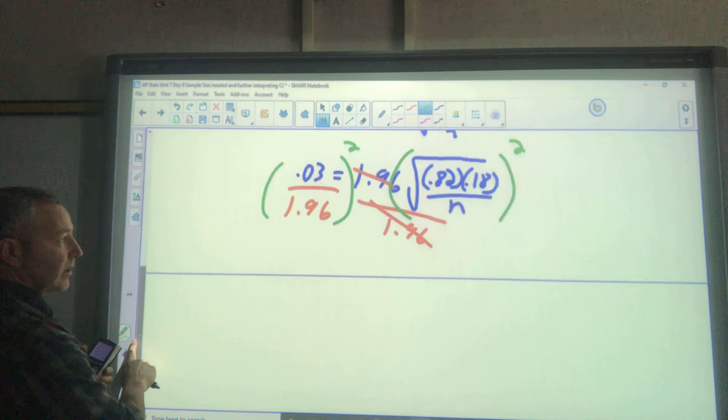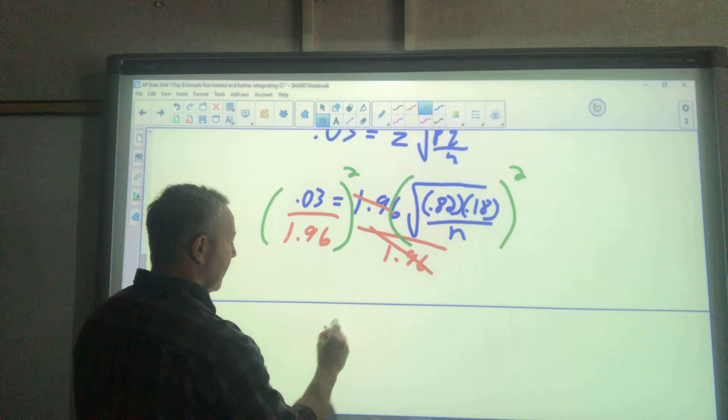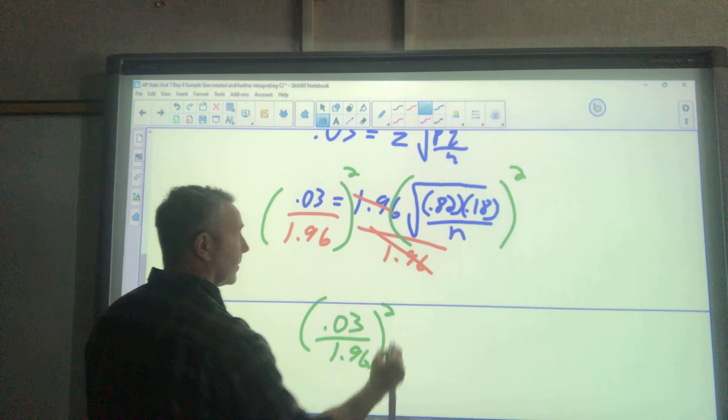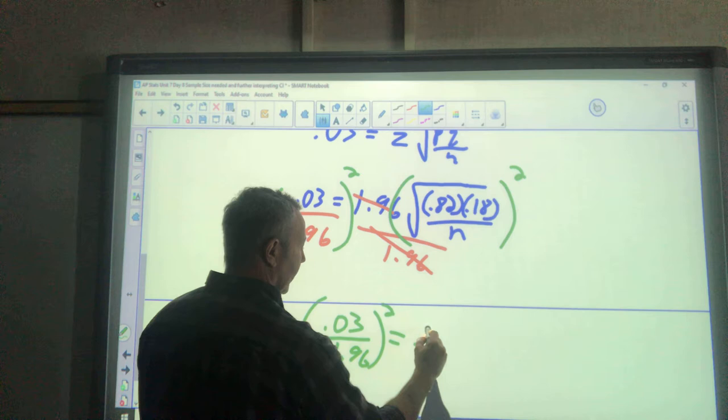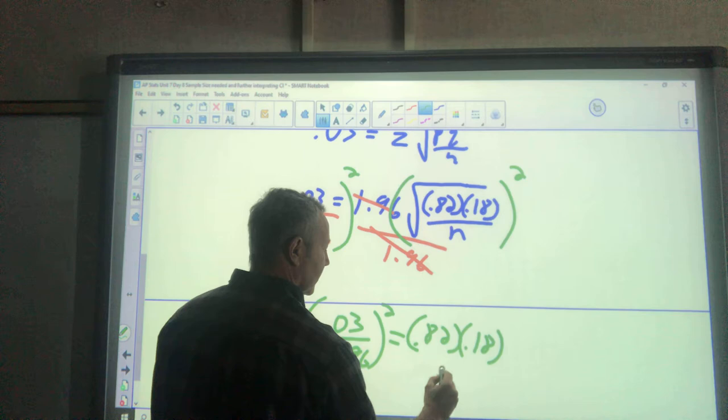0.03 divided by 1.96 squared equals—my square is undone, the square root—I have 0.82 times 0.18 divided by n.